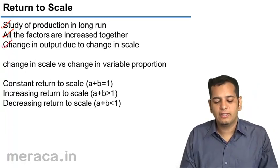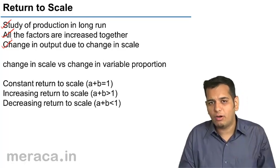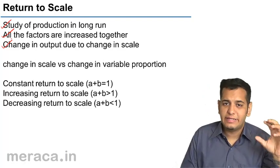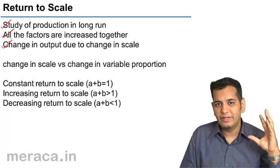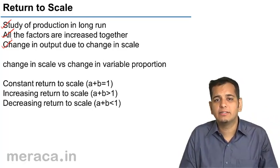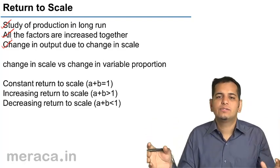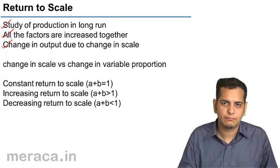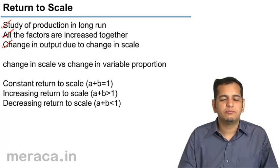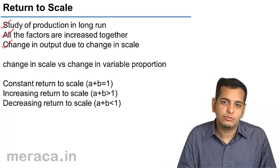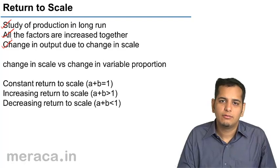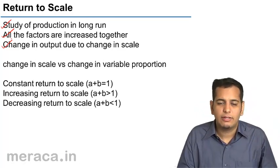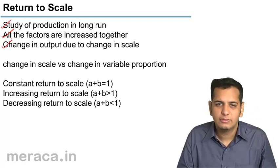The law of returns to scale measures the change in the level of output due to the change in the scale of inputs. There is a difference between change in scale and change in variable proportion of inputs. Change in scale implies when all the factors are increased together or all the factors are decreased together. Change in variable proportion means the other factors are constant and only the variable factor of production is changed, so the proportion of the variable factor is changed.